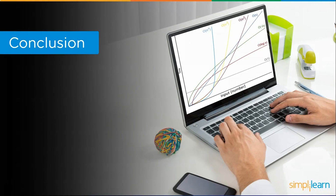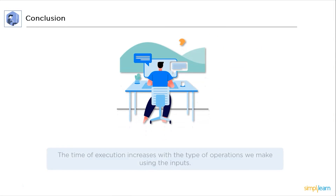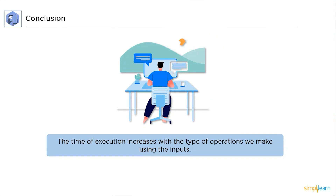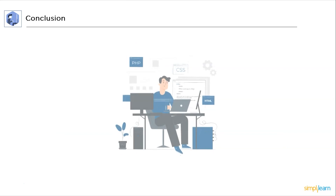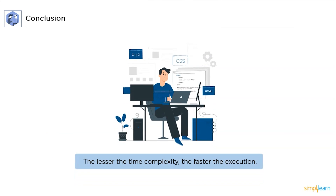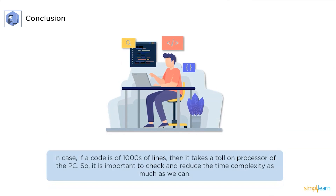We have now discussed time complexity, how to evaluate it, and the time complexity of various algorithms. To summarize: the execution time increases with the types of operations we make using the inputs. The lesser the time complexity, the faster is the execution. If a code is hundreds of lines, it takes a toll on the processor, so it is essential to check and reduce the time complexity as much as we can.